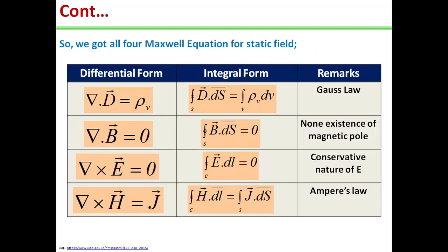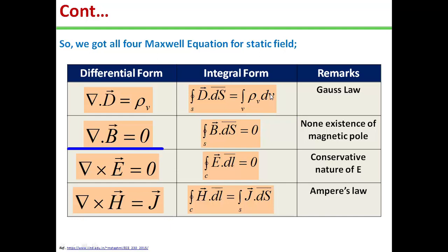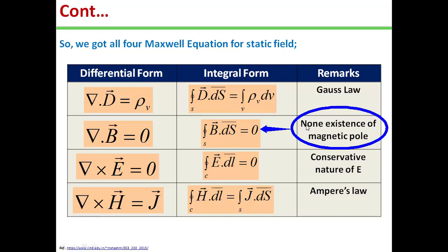Now, from all we have learned in previous videos for static fields — electrostatic and magnetostatic — we have obtained all four Maxwell equations. Here you can see all four Maxwell equations given in differential form and integral form. Gauss's law of electrostatics gives del dot D equal to rho v, and in integral form, closed surface integral D dot ds equals volume integral rho v dv. Gauss's law of magnetostatics gives del dot B equal to zero, and in integral form, closed surface integral B dot ds equals zero — meaning isolated magnetic poles never exist.